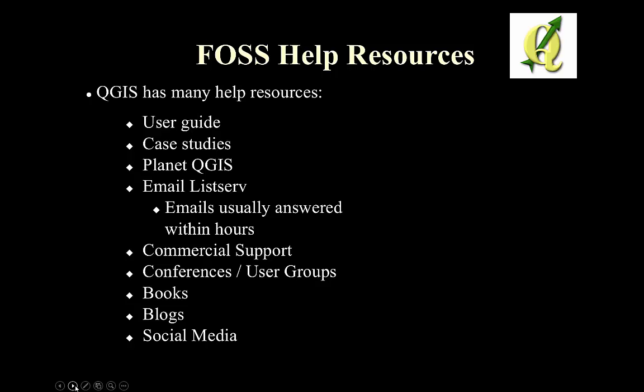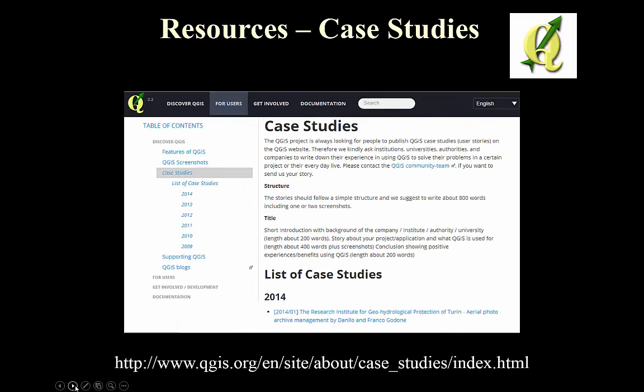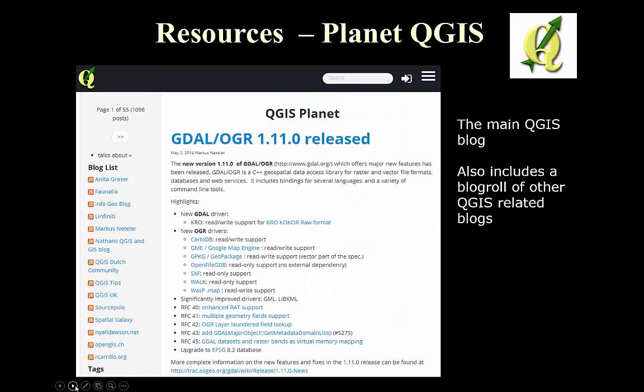You can also read the email listserv every day to see the kinds of issues people are having. There's also commercial support — organizations you can pay to provide support and training for QGIS. There are conferences, user groups, books, blogs, and social media. The QGIS user guide is very thorough and a great place to check if there's functionality you're unsure how to use. Case studies going back several years show how different organizations have used QGIS to solve geospatial problems. Planet QGIS also includes a blogroll of other QGIS-related blogs.